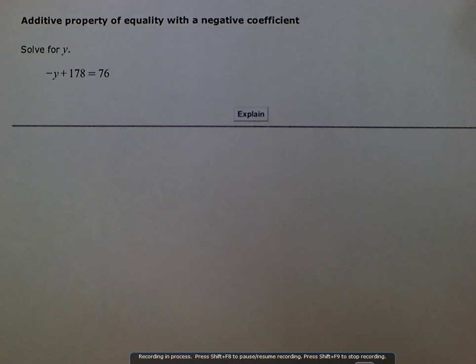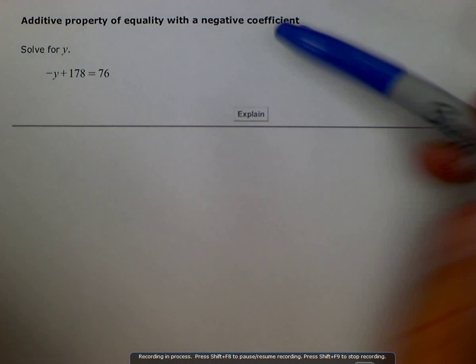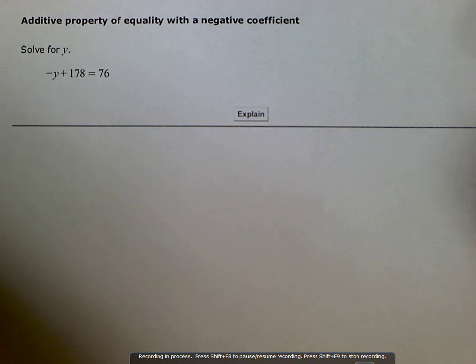We're trying to solve for y and we have a negative y here on the left side. There's two ways we can go about this because this is going to be two steps.